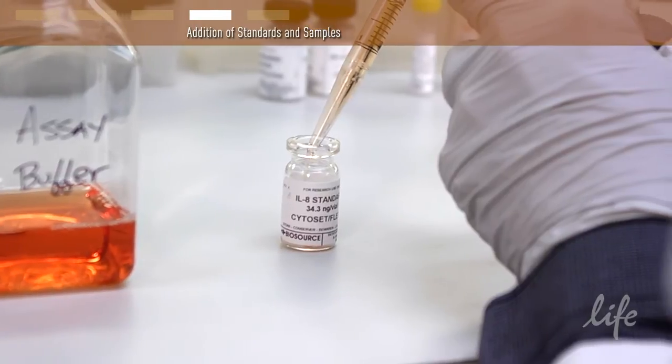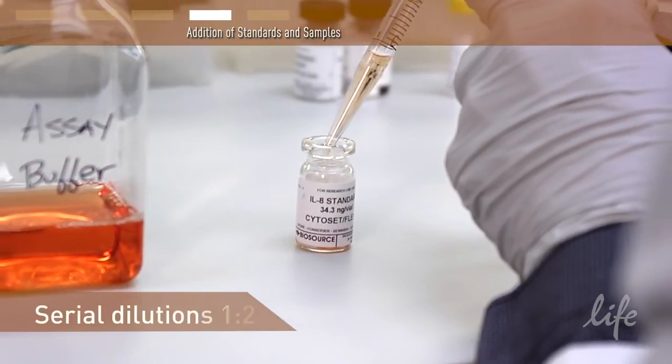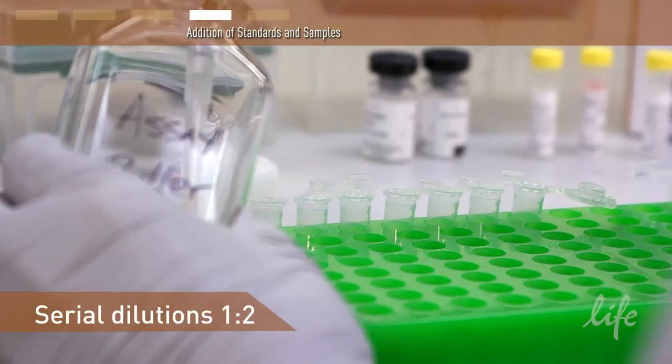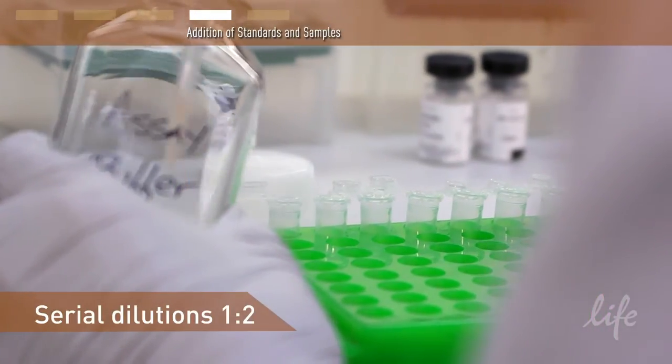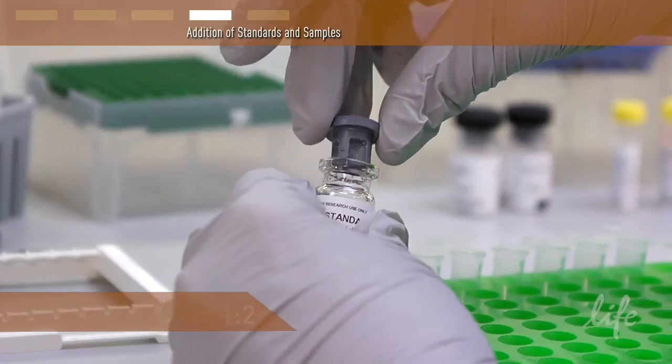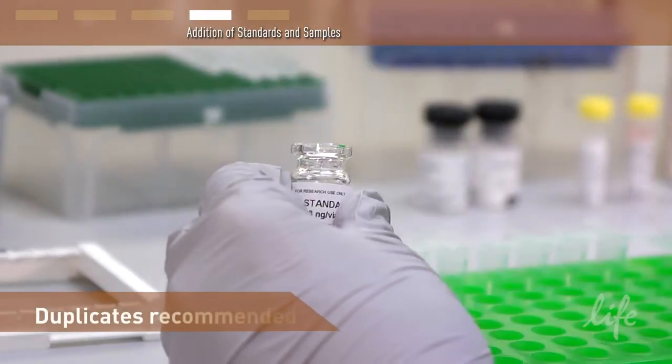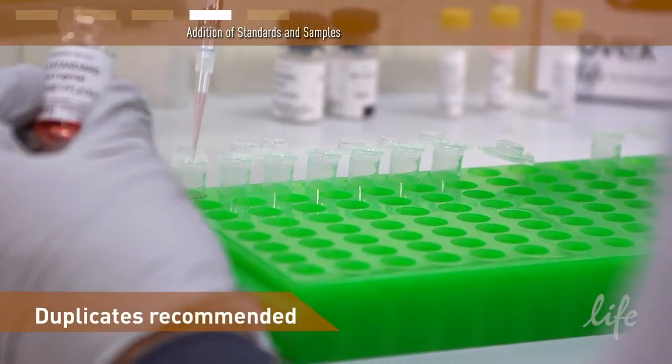Prepare a 7-point standard curve by serial dilution according to the technical data sheet. The low standard or zero standard will be the reconstitution buffer alone. Prepare sufficient volume to run each standard in duplicate at 100 microliters per well.